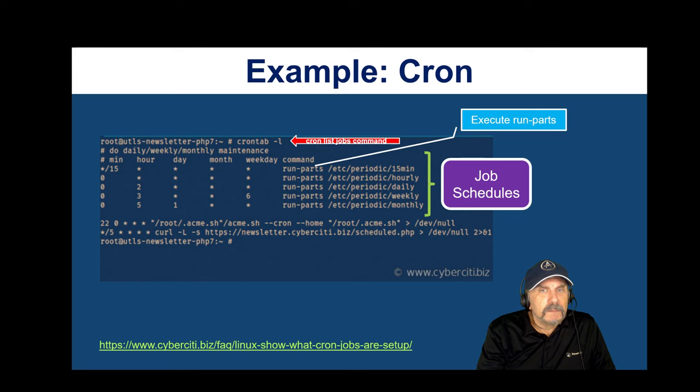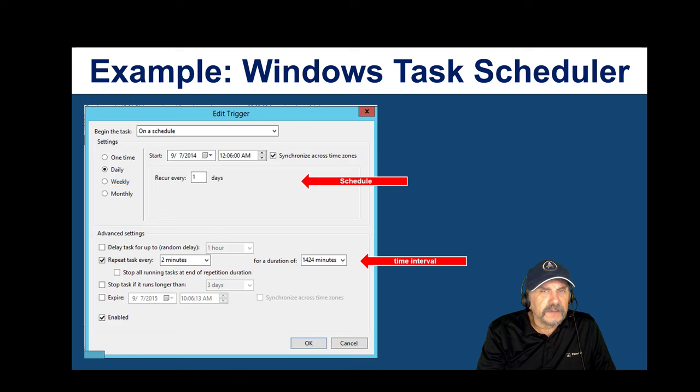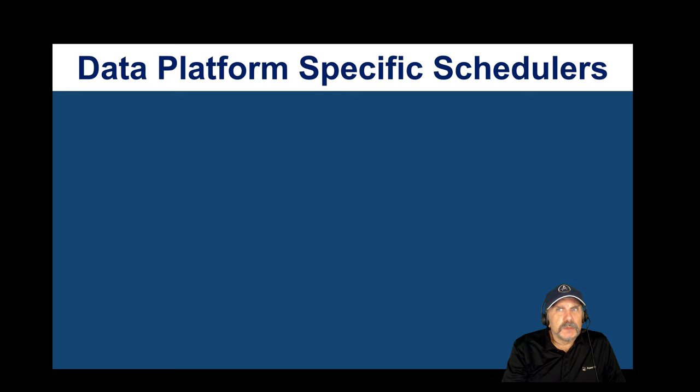The Windows Task Scheduler is similar but GUI-based rather than command line. You go in and create a task with the same scheduling flexibility, and you can also set when the job should be turned off and how long you want it to keep running — which is a nice option to have.